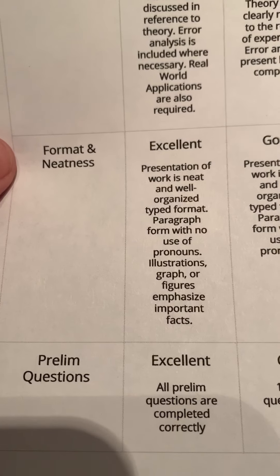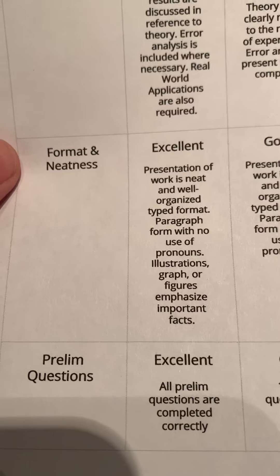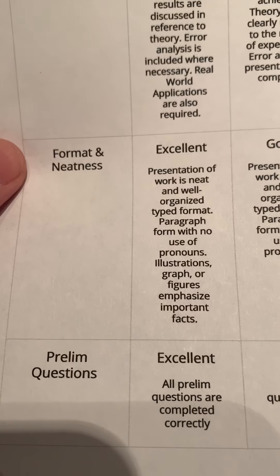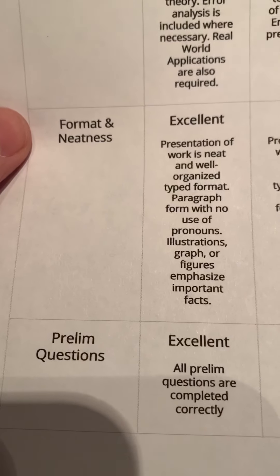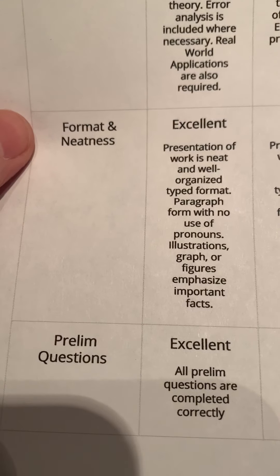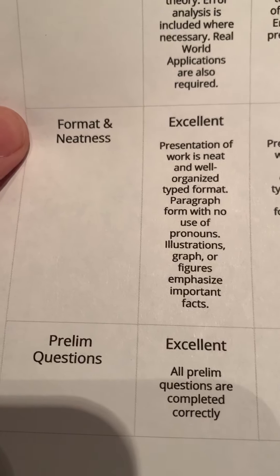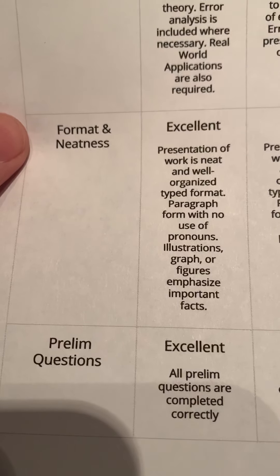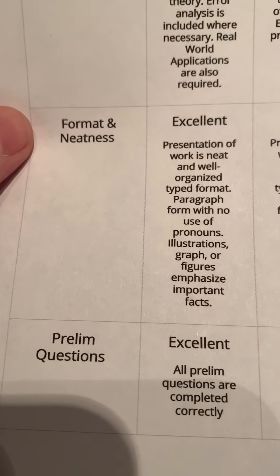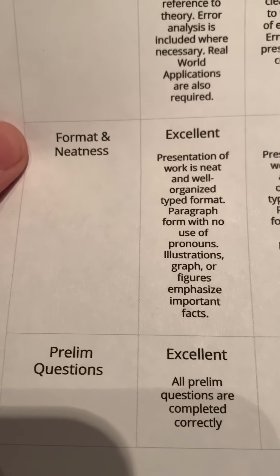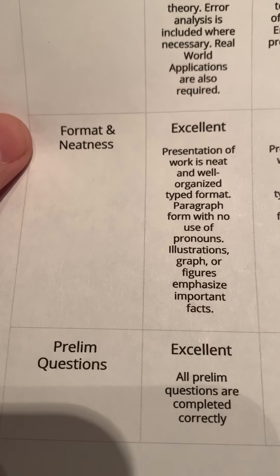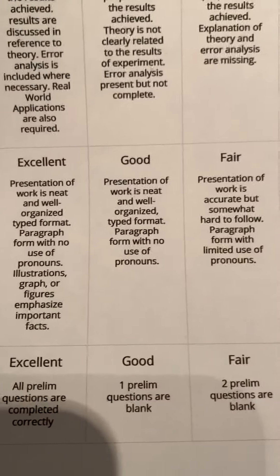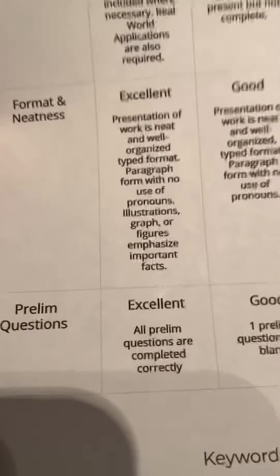Format and neatness: presentation of your work is neat, well-organized, and it is typed. Paragraph form and no use of pronouns — in your conclusion you would write in paragraph form, and everywhere else would be step-by-step or bullet points. But no pronouns: no he, she, we, they. Illustrations and graphs or figures should emphasize important facts. If the data looks great, that would get you to the highest level. All of these sections have good, fair, poor, and no credit ratings, so you can go through each section of the rubric.